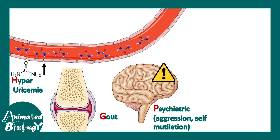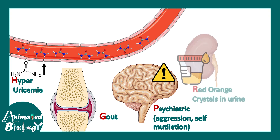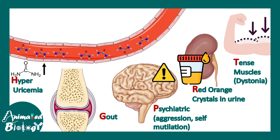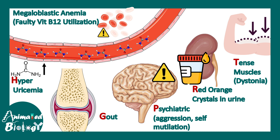Deposition of crystals in the brain can lead to psychiatric manifestations like aggression and self-mutilation. Uric acid stones are excreted through the kidney as red-orange crystals, and they can also cause tense muscles as in dystonia. Hematological complications include faulty utilization of vitamin B12, leading to metabolic megaloblastic anemia.